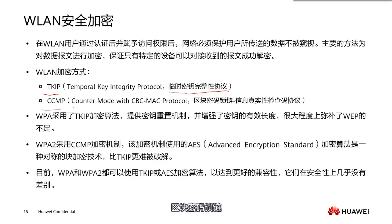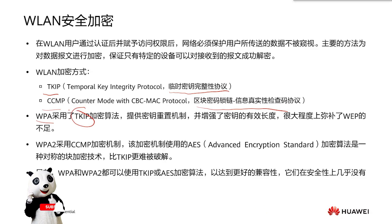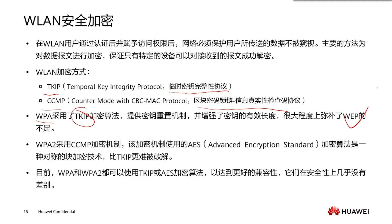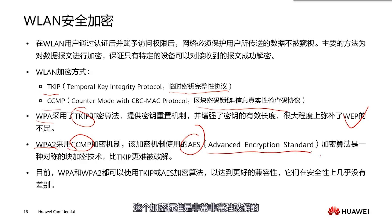WPA uses the TKIP encryption algorithm, which is much stronger than WEP. WPA2 uses the CCMP encryption algorithm, which utilizes AES, the Advanced Encryption Standard — a very difficult encryption standard to break; even supercomputers might take a long time to crack it. Therefore, WPA2 is currently considered relatively secure.